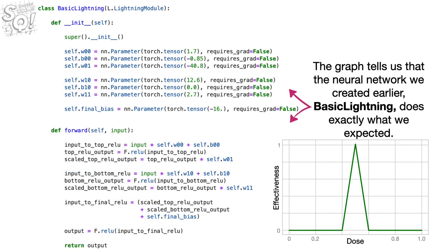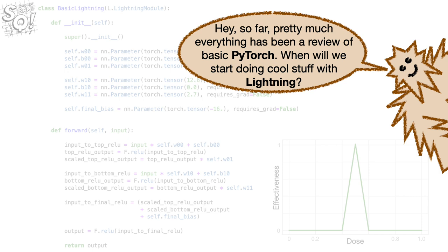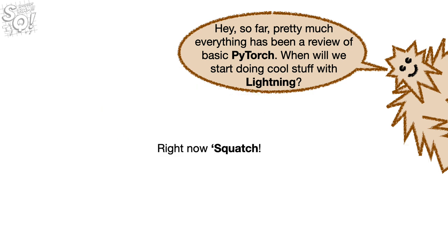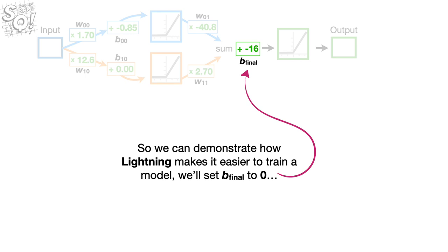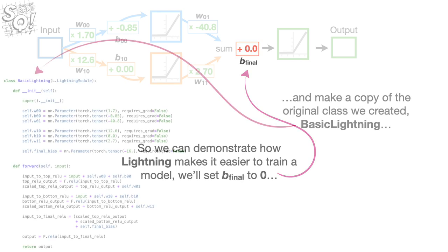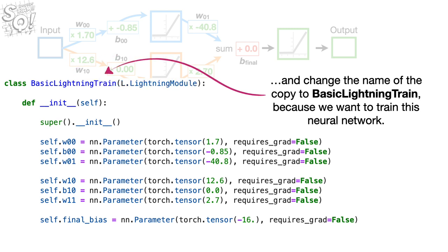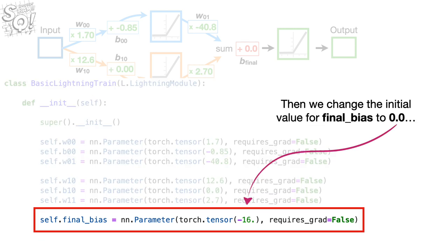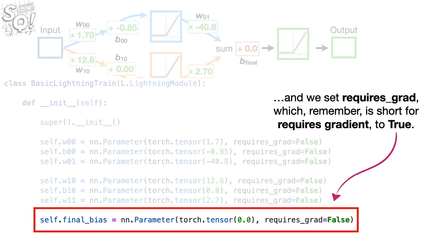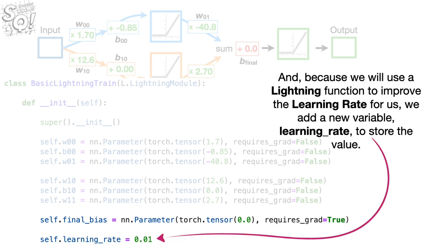The graph tells us that the neural network we created, BasicLightning, does exactly what we expected. So far, pretty much everything has been a review of Basic PyTorch — but now let's start doing cool stuff with Lightning. To demonstrate how Lightning makes it easier to train a model, we'll set B_final to 0, make a copy of BasicLightning, rename it BasicLightningTrain, change the initial value for the final bias to 0.0, and set requiresGrad to true. And, because we will use a Lightning function to improve the learning rate for us, we add a new variable, learningRate, to store the value. For now we set learningRate to 0.01, but this is just a placeholder — the actual value does not matter right now.